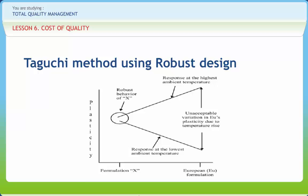The trick he said is to uncover any exploitable interaction between the effect of changing the design X, for example from the European formulation to formulation X, and temperature. Figure shows such an interaction experimentally uncovered.